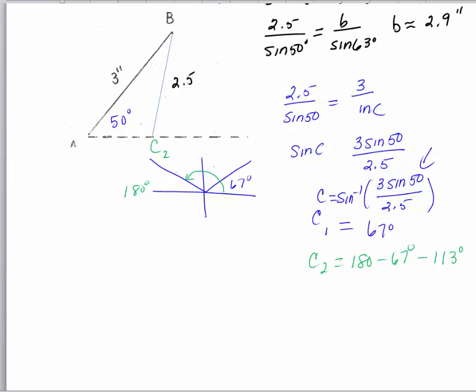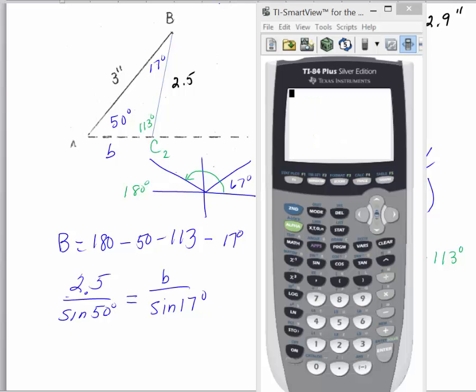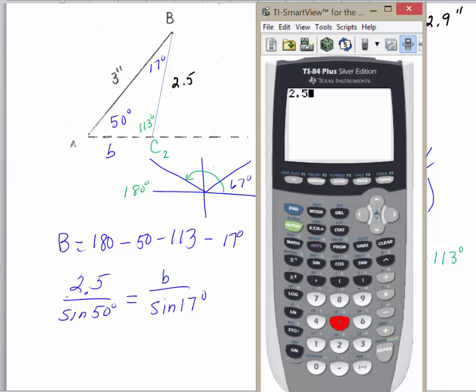So our second angle C, the obtuse angle, is 113 degrees. We find angle B by subtracting 50 and 113 from 180, so B equals 17 degrees. To find side B, we use the Law of Sines: 2.5 over the sine of 50 degrees equals B over the sine of 17. Solving, B equals 2.5 times the sine of 17 degrees divided by the sine of 50 degrees, which is approximately 0.95, or rounding to the nearest tenth, 1.0.